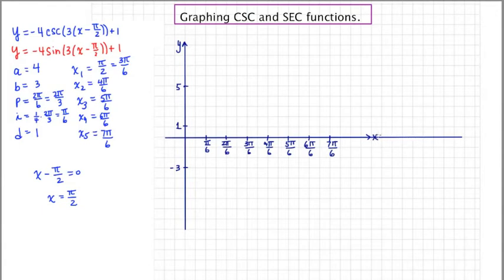Alright, I'm going to start by actually drawing the sine graph. This is going to be my helper graph. So what I'm going to do is I'm going to put a midline here at 1, and I'm going to make it dotted. This is the midline for both the sine graph and for the cosecant graph.